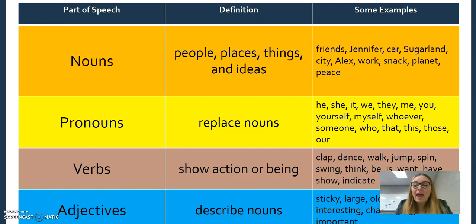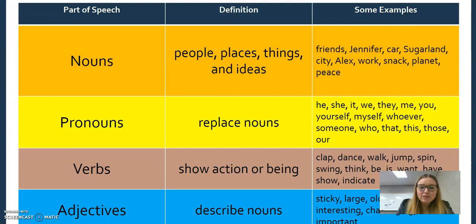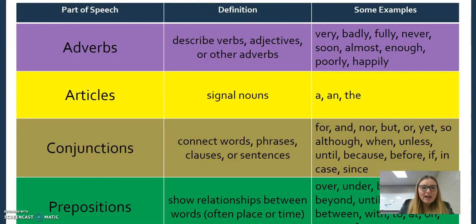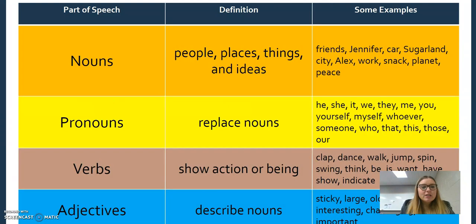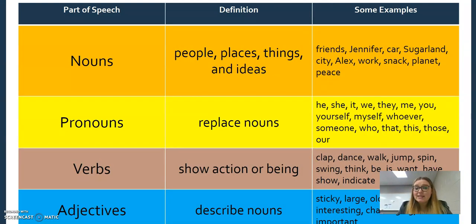There are eight parts of speech in grammar: nouns, pronouns, verbs, adjectives, adverbs, articles, conjunctions, and prepositions. Going back to these — nouns is the most basic. It's people, places, things, and ideas, everything from friends to Jennifer to world peace.